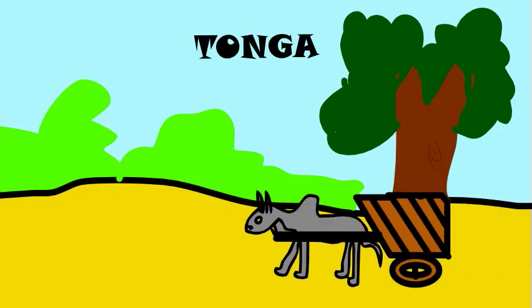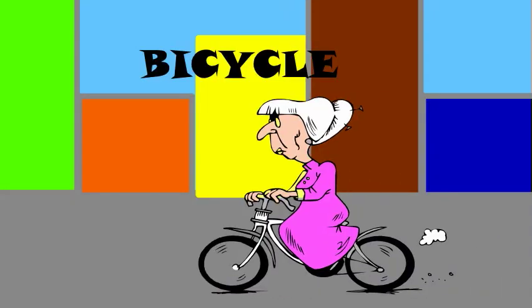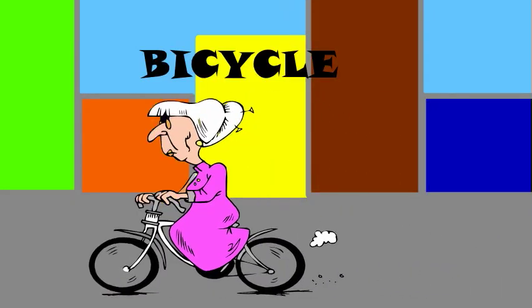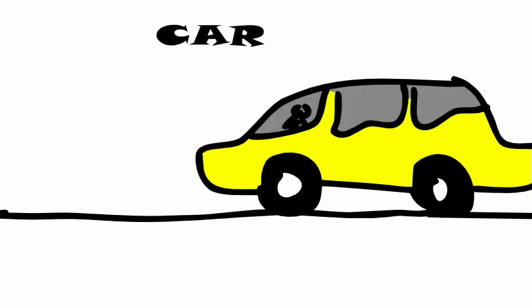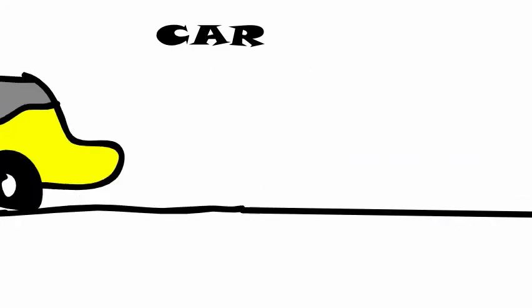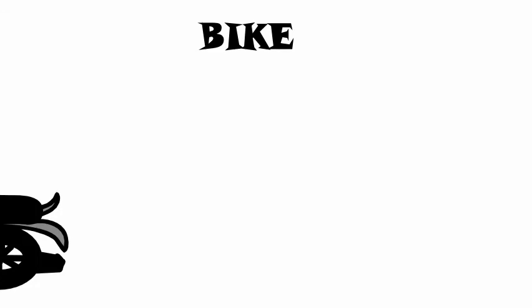Roadways vehicles include: Tonga, Bicycle, Auto, Car, Bus, Bike. The end. Animation by Suresh from class 5th E.